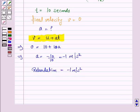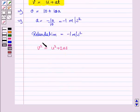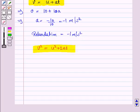Now, v² equals u² plus 2as, where v is the final velocity, u is the initial velocity, a is the acceleration—but since here we have retardation, it will be minus 1 m/s²—and s is the distance travelled.